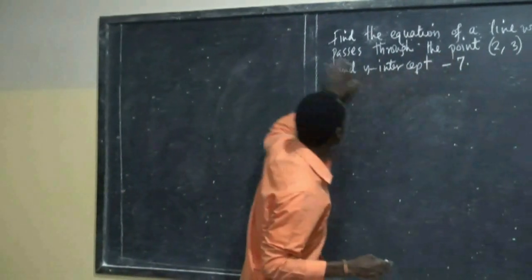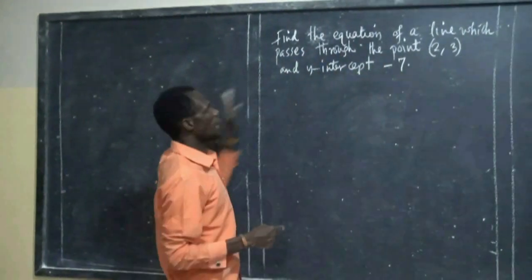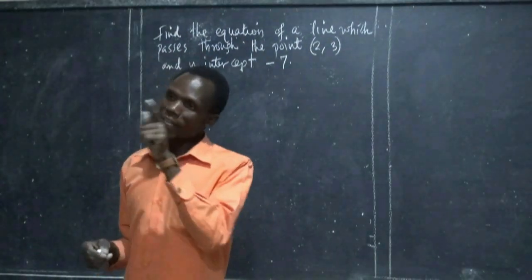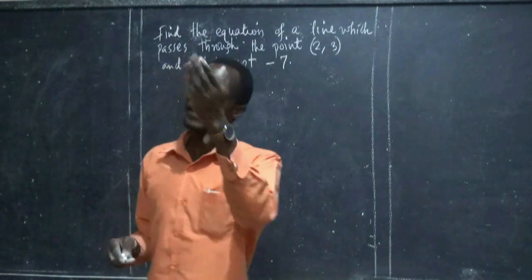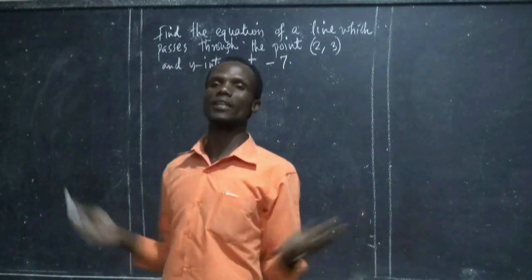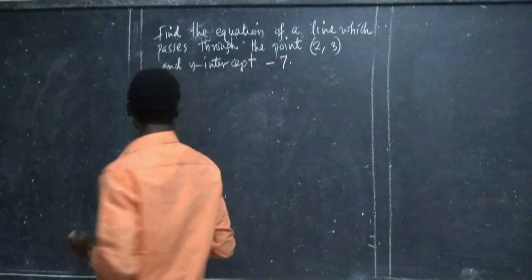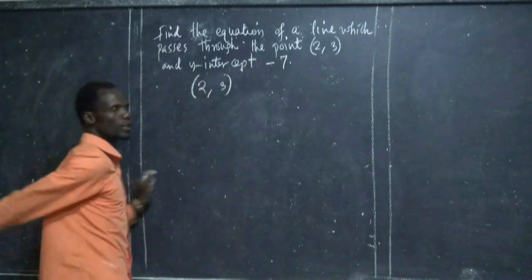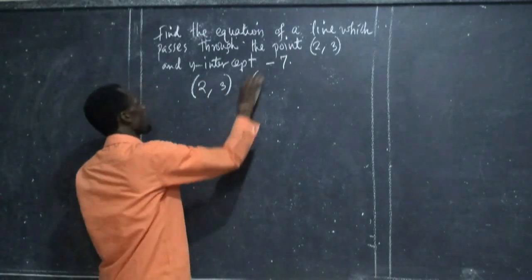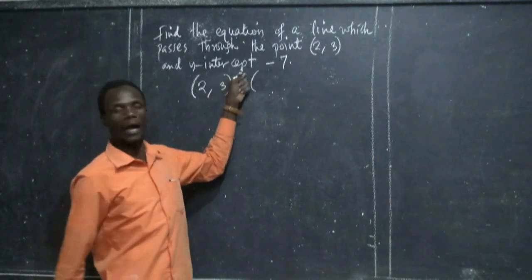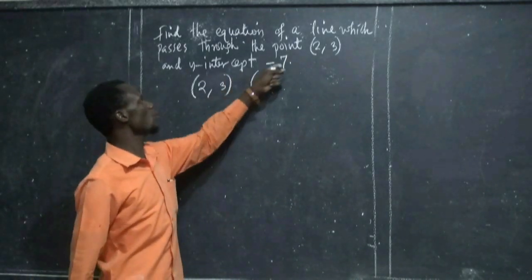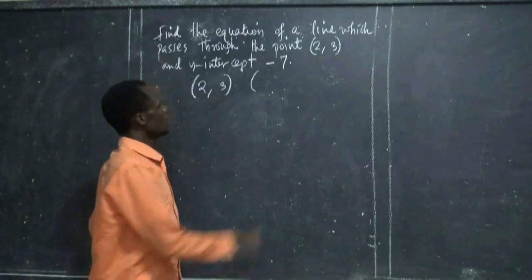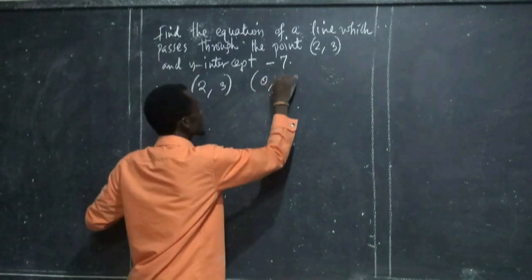Find the equation of a line which passes through the point. You have been given a point and the y-intercept. The point is (2, 3). The other point can be obtained from the y-intercept. The y-intercept is obtained when x is 0, so when x is 0, y is negative 7.